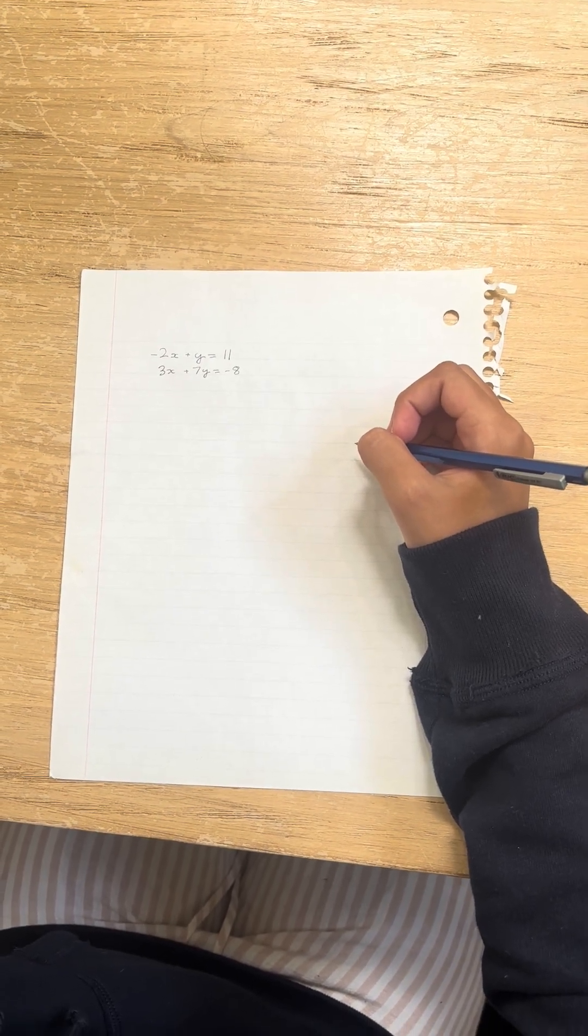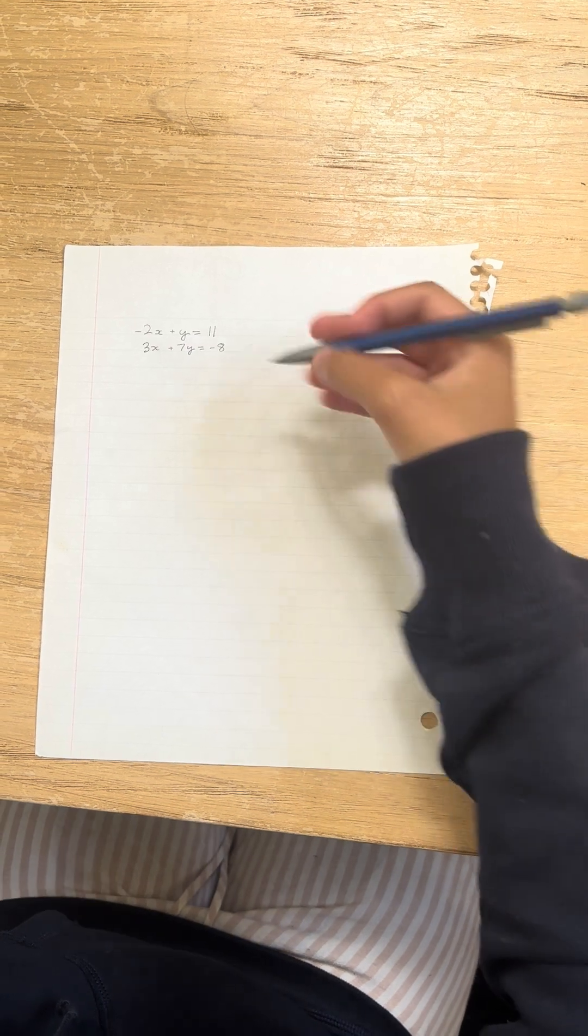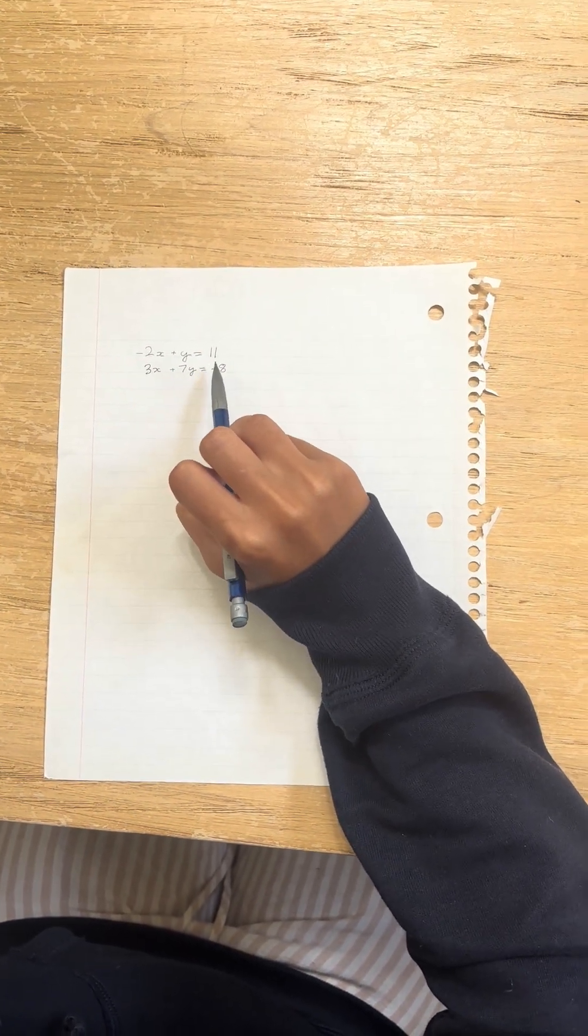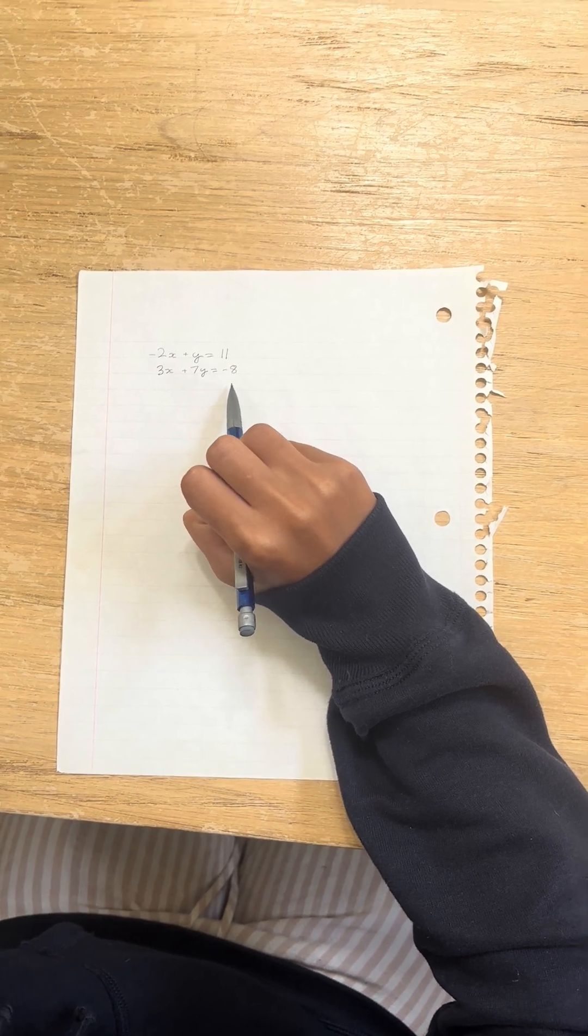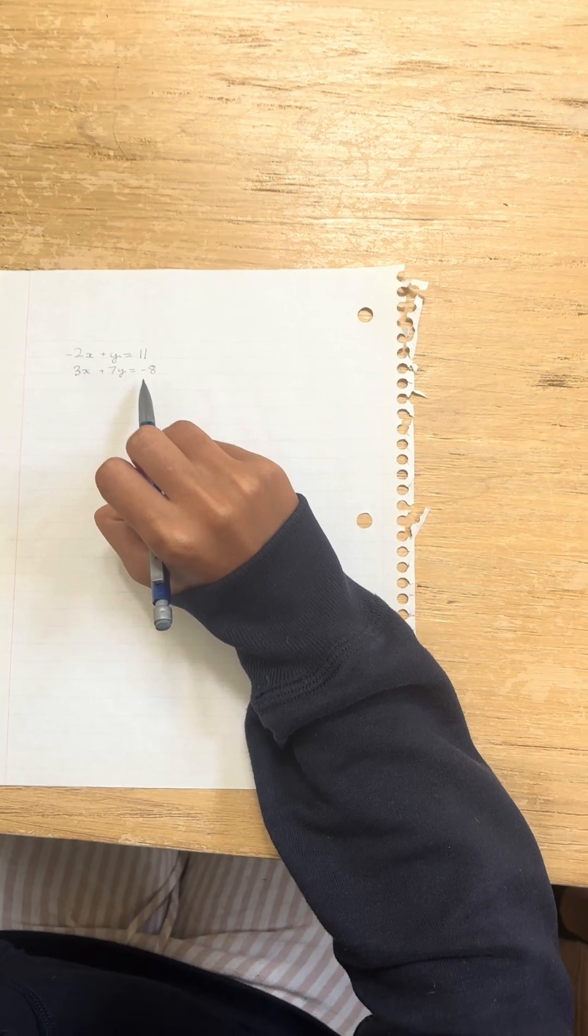Okay, so in this video today we're going to be talking about how to solve two-step equations. So we have two equations here: minus 2x plus y equals 11, and we have 3x plus 7y equals negative 8. And what we want to do is we want to find x and y. So how do we do that?